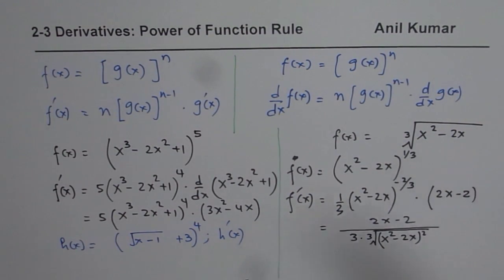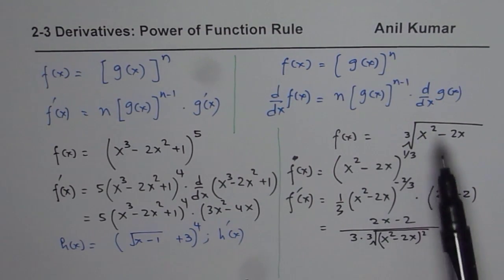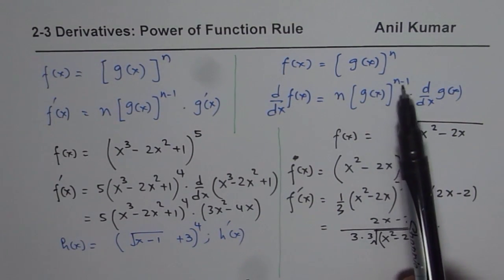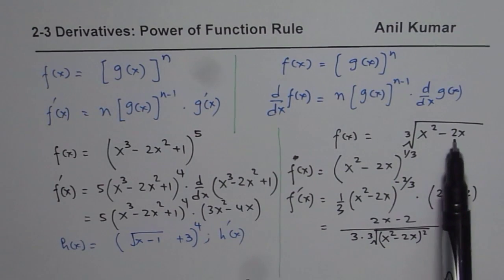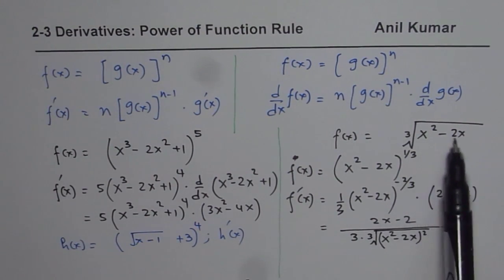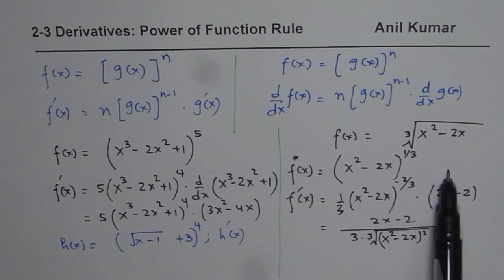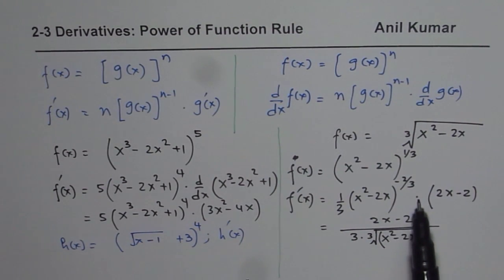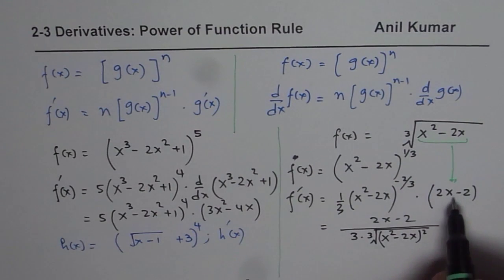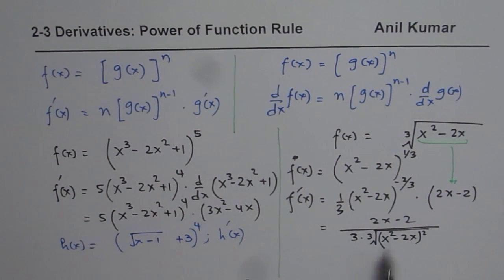So when we use the power of a function rule, what we do is apply the power rule first: n times the function itself to the power of n minus 1, times the derivative of the inside function. Here n was 1 over 3, so one-third times the function to the power of 1 over 3 minus 1, which is minus 2 over 3, times the derivative of x squared minus 2x, which is 2x minus 2. Then you multiply, simplify, and write down your answer. I hope that helps. Thank you and all the best.